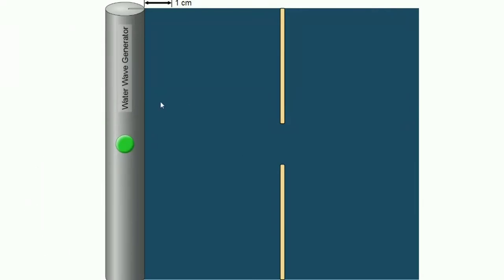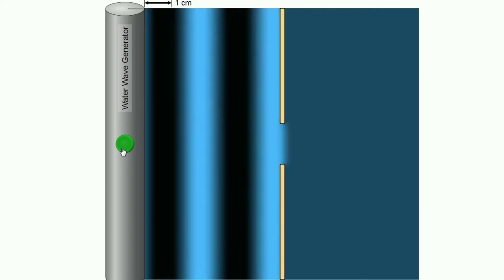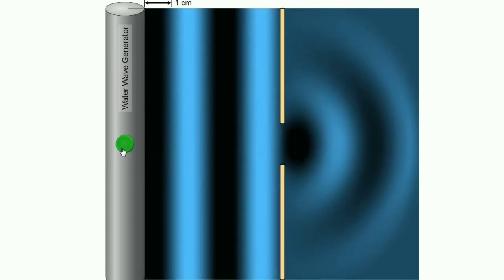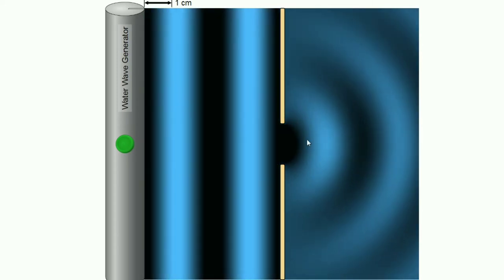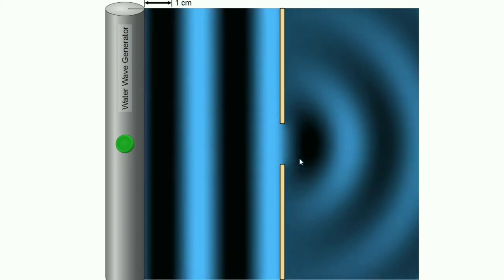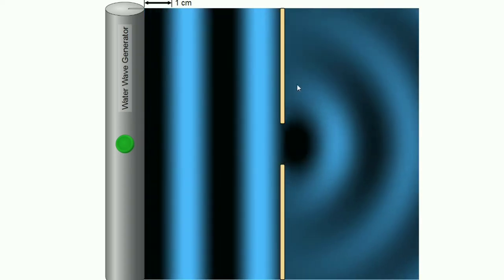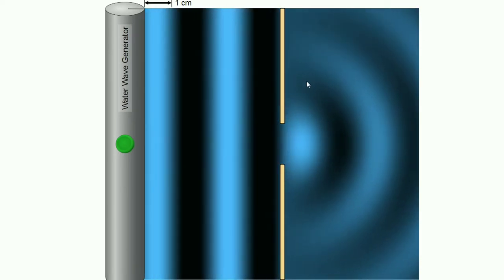This video covers the concept of diffraction. Diffraction is the slight bending of waves as it passes around the edge of an object. Here, a water wave simply passes through slits and the wave bends — so the water wave is diffracted through the slits.